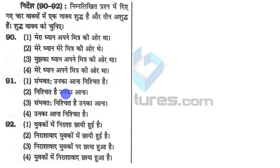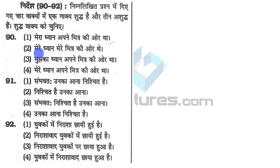They have given four sentences and are saying that only one of them is grammatically correct. 'Mera dhyan apne mitra ki or tha' — this is correct. 'Mere dhyan mere mitra ki or tha' — this is wrong. So the correct option is going to be the first one.